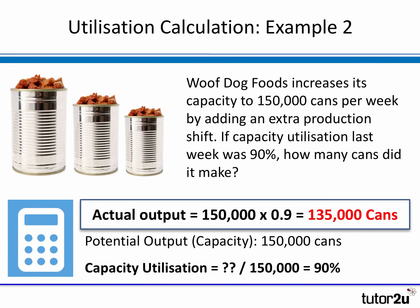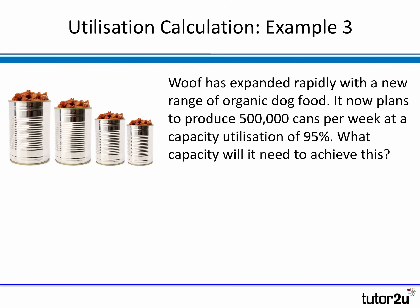One final example, to show the different ways capacity utilization can be asked. Woof has expanded rapidly with a new range of organic dog food. It now plans to produce 500,000 cans — half a million cans per week — and is planning a capacity utilization of 95%. So it wants the actual output to be 500,000 cans per week at 95% utilization. What capacity would it need to achieve this?